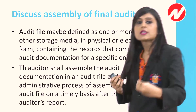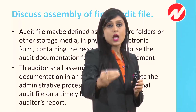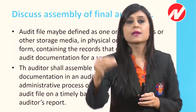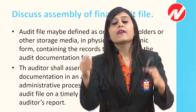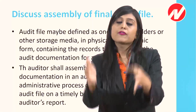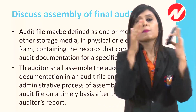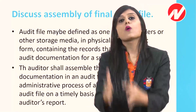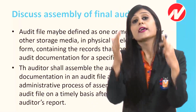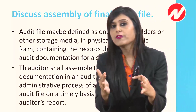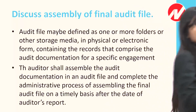After issuing the audit report, gather all the evidence and place it in one file. In short, assemble the audit documentation — everything that is scattered here and there — put it together, then keep it in the form of a file, and that file is called the audit file. That is what the assembly of the final audit file means.